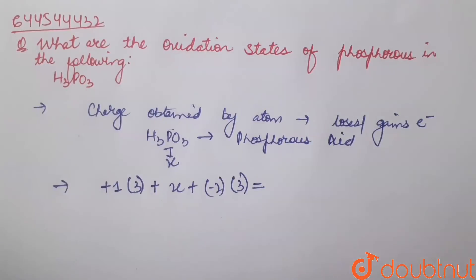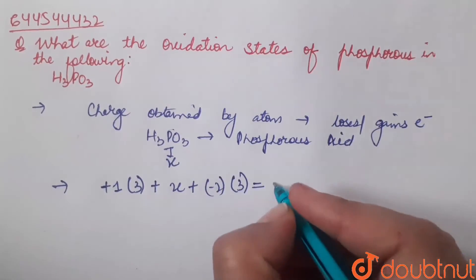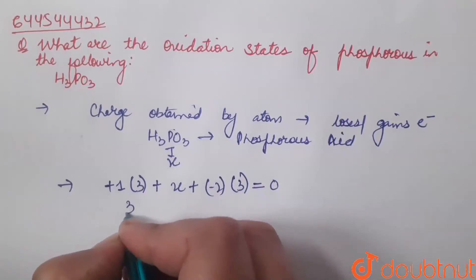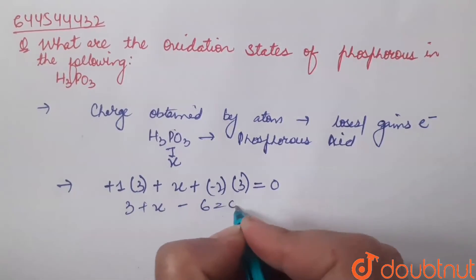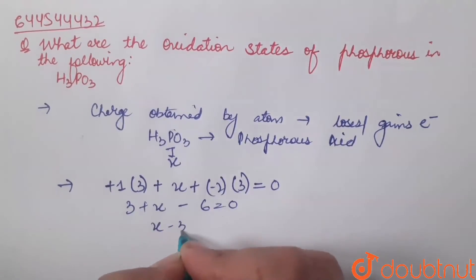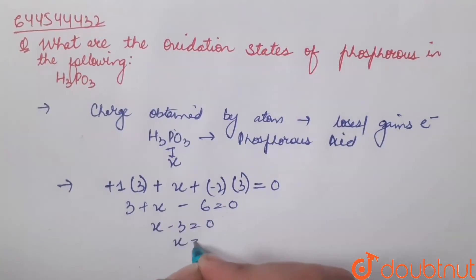As H3PO3 is a neutral compound, overall charge equals to 0. That equals to 3 plus X minus 6 equals to 0. So, X minus 3 equals to 0. So, X equals to plus 3.